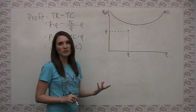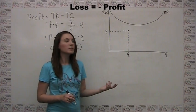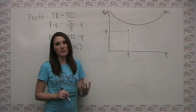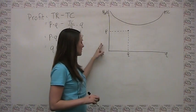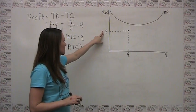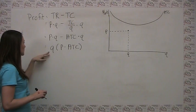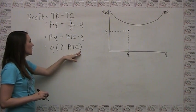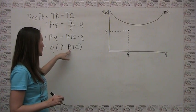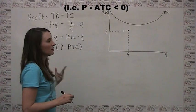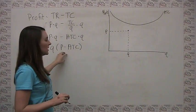A firm can have negative profits, which we refer to as losses. We can show losses graphically in much the same way as profits, with one minor change. Let's say our firm is producing a quantity Q at a price P. The relationship still holds: profit equals quantity times (price minus average total cost). But when making negative profits, our price is actually less than average total cost, meaning the price is not high enough to cover the cost of production.